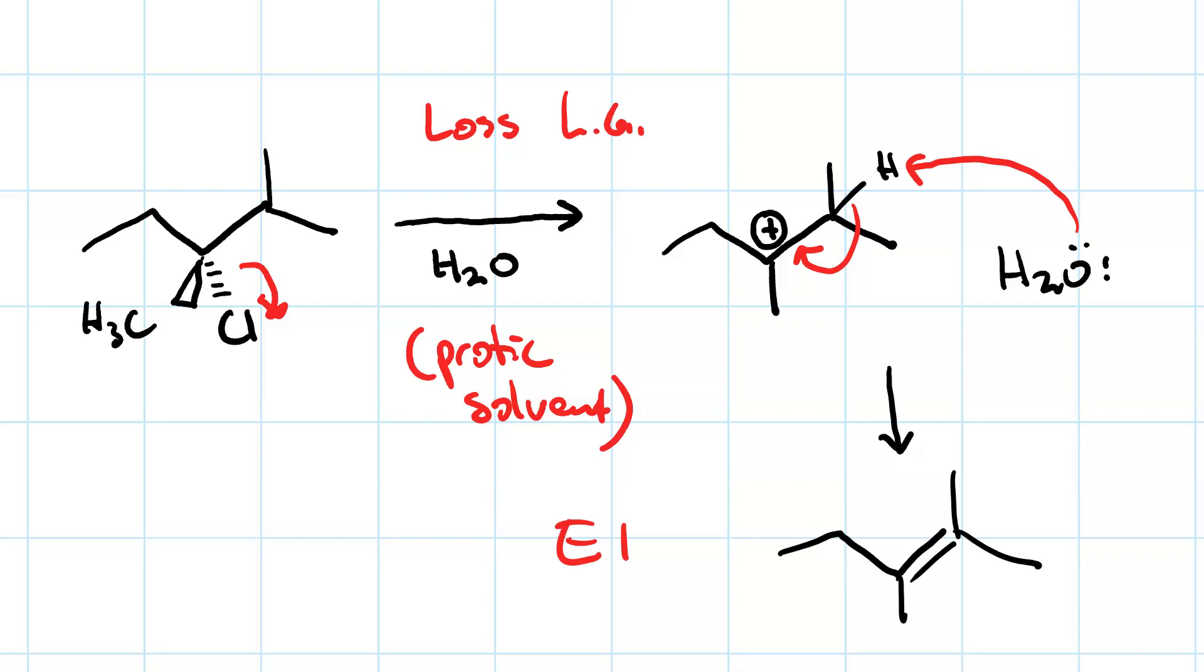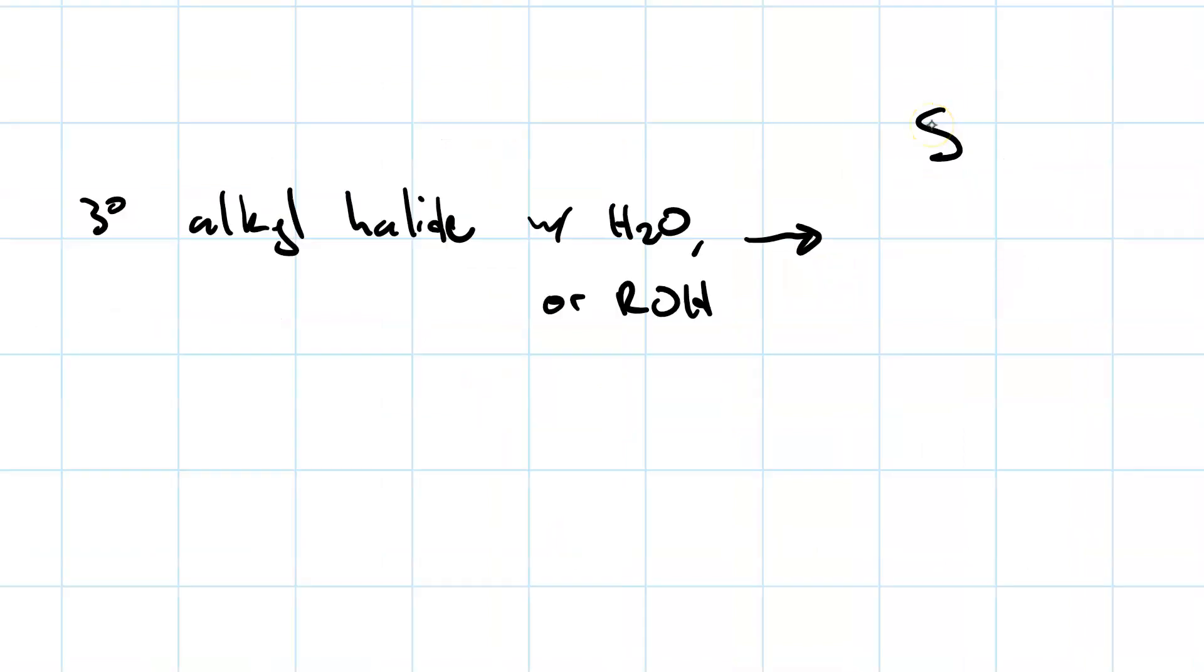When you use water or an alcohol, you'll get a mixture of SN1 products and E1 products. If you want to favor the SN1, do it at a low temperature. If you want to favor the E1 product, do it at a high temperature. But regardless, you're still going to get a mixture no matter what.